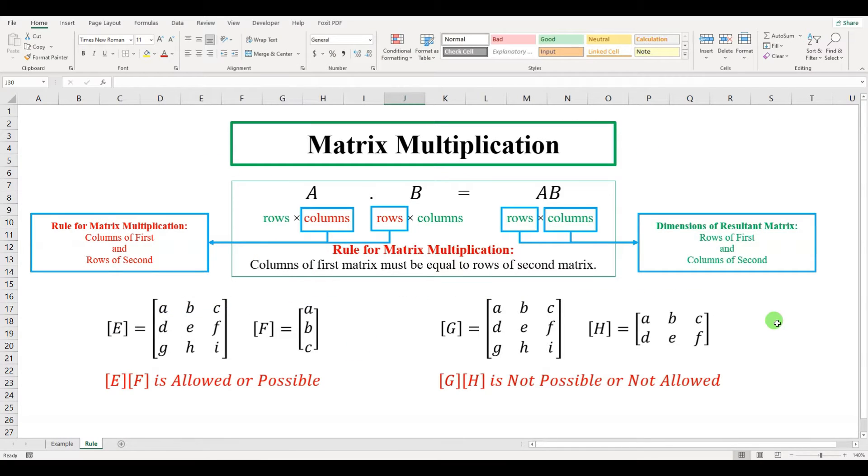You should know the matrix multiplication rule, which states that the number of columns of the first matrix must be equal to the number of rows of the second matrix.